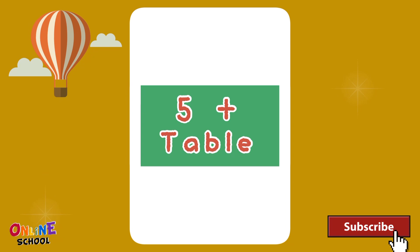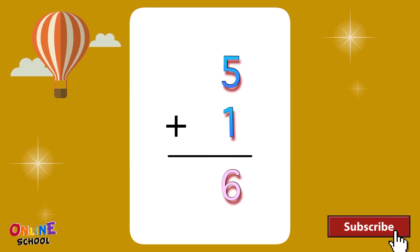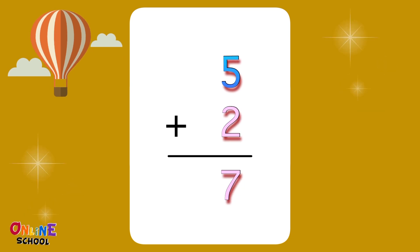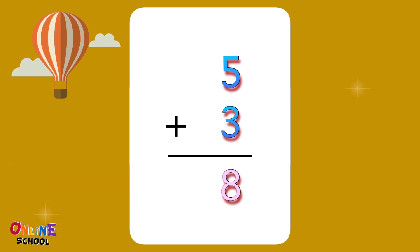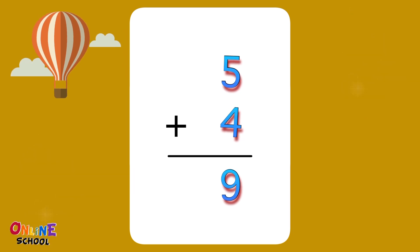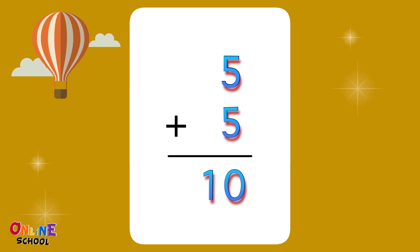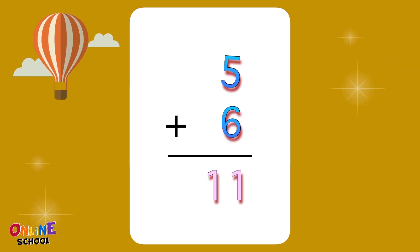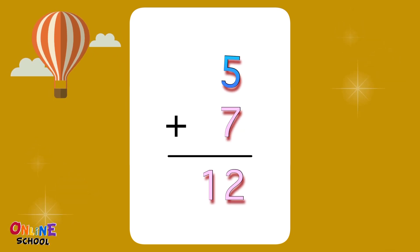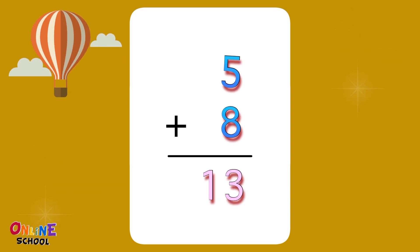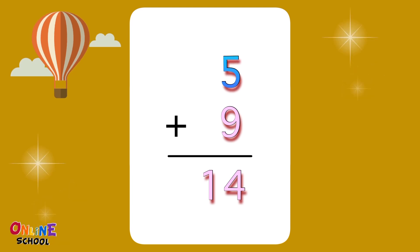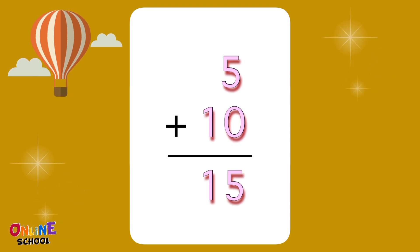Table 5: 5 plus 1 equals 6, 5 plus 2 equals 7, 5 plus 3 equals 8, 5 plus 4 equals 9, 5 plus 5 equals 10, 5 plus 6 equals 11, 5 plus 7 equals 12, 5 plus 8 equals 13, 5 plus 9 equals 14, 5 plus 10 equals 15.